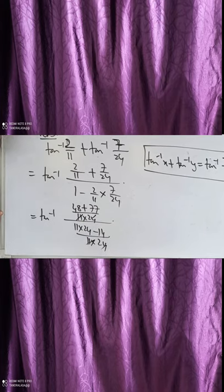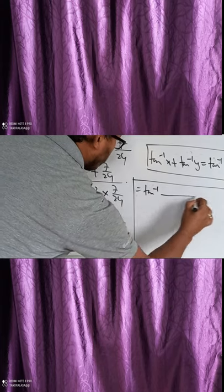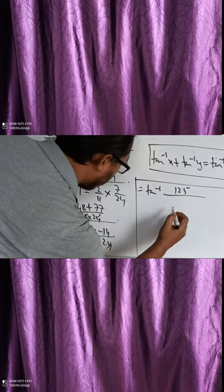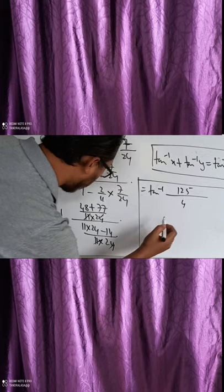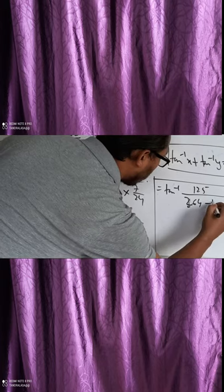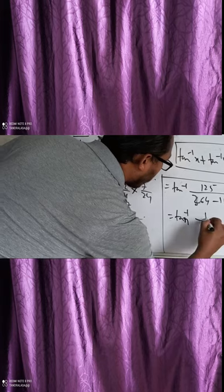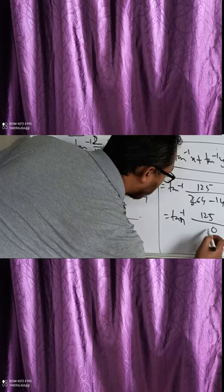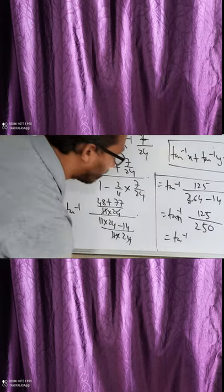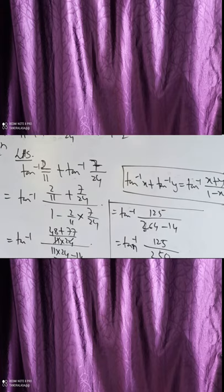We cancel the common factor. This gives tan⁻¹ of (48 plus 77) over (264 minus 14). That is tan⁻¹(125/250). If we cancel 125 by 250, we get 1/2. So we have proved that tan⁻¹(2/11) plus tan⁻¹(7/24) equals tan⁻¹(1/2).